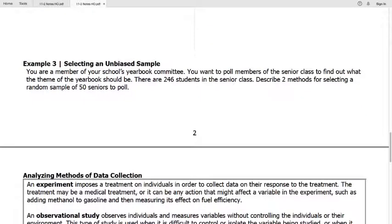Example three, we have this question. We're a member of the school's yearbook committee. We want to pull members of the senior class to find out what theme of the yearbook we should use. There are 246 students in the senior class. Describe two methods for selecting a random sample of 50 seniors to poll. Okay. I'm just going to talk through this. I'm not going to write the answers down. It's on the answer key online. One way, maybe I'll write some of this down. Pull 50 names from a hat or a well-mixed bowl. So put every student's name in the bowl on a piece of paper, mix it around really, really well, and pull 50 names at random. Another way that we could do this would be to assign every student a number from one to 246. And then generate 50 random integers using a computer or a calculator between one and 246. And those are your 50 random students being selected. All right. Different options there. A lot more answers to if you can come up with one.